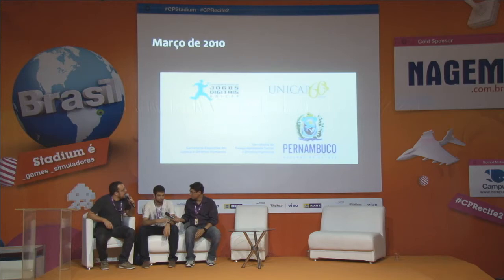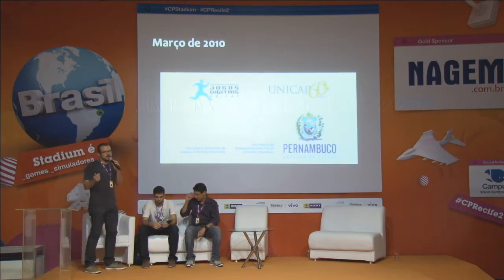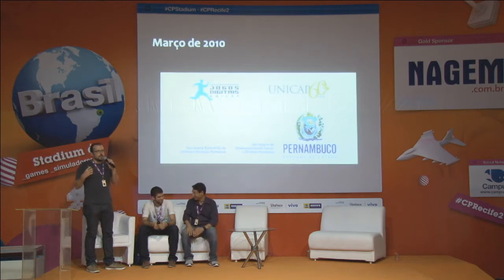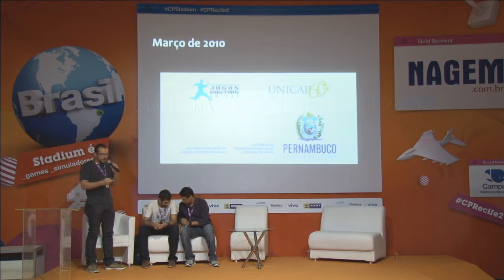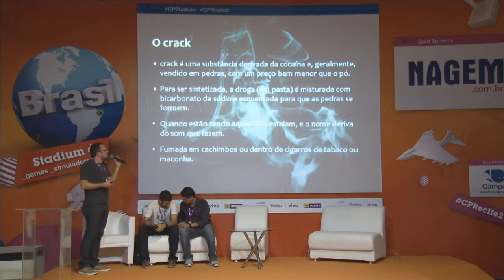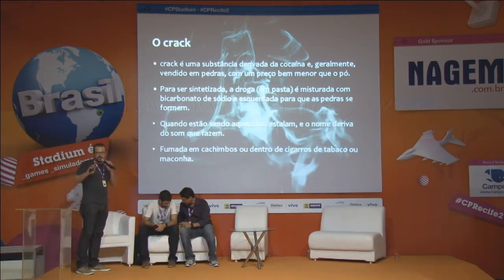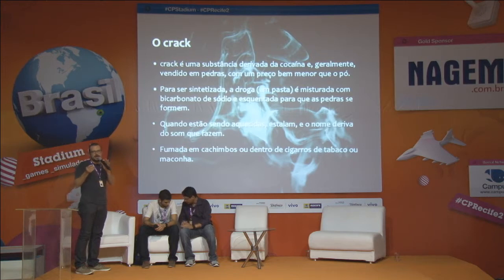A gente começou a estudar o que era o crack, quais eram as características dessa epidemia em particular, como é que ela se infiltrava nas comunidades carentes e como ela afetava as crianças dessas comunidades. O crack é uma substância derivada da cocaína. Normalmente a gente pensa que é um subproduto da cocaína, que do refino sobra uma pasta da qual é feito o crack. Mas na verdade o crack é um produto diferente da mesma substância.